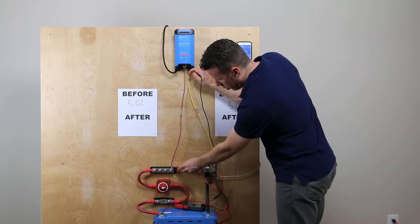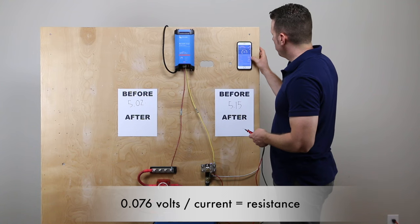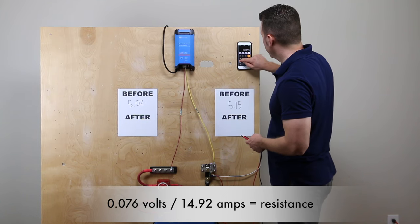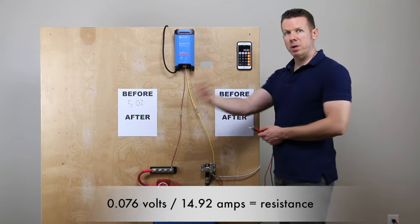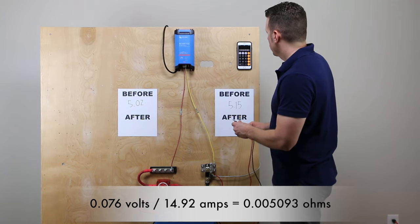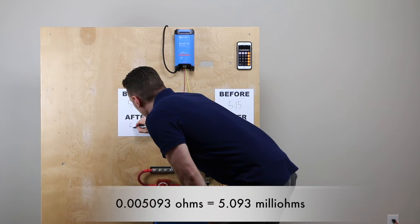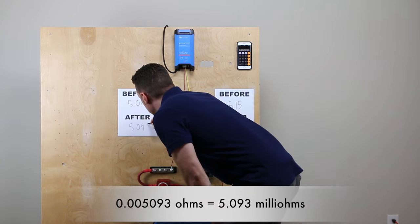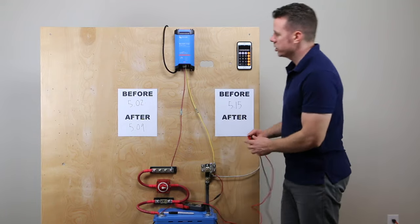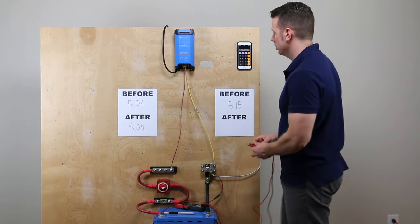On the positive, we're going to get that voltage drop, 0.076 volts and 14.92 amps. 0.076 divided by 14.92 amps, and that's going to spit out our ohms of resistance, 5.093 ohms. We'll just leave it at 5.09, keep it simple. So on this side, you can see the resistance went up, that's 5.09 milliohms, so it's very minimal. Let's see what we have on this side.